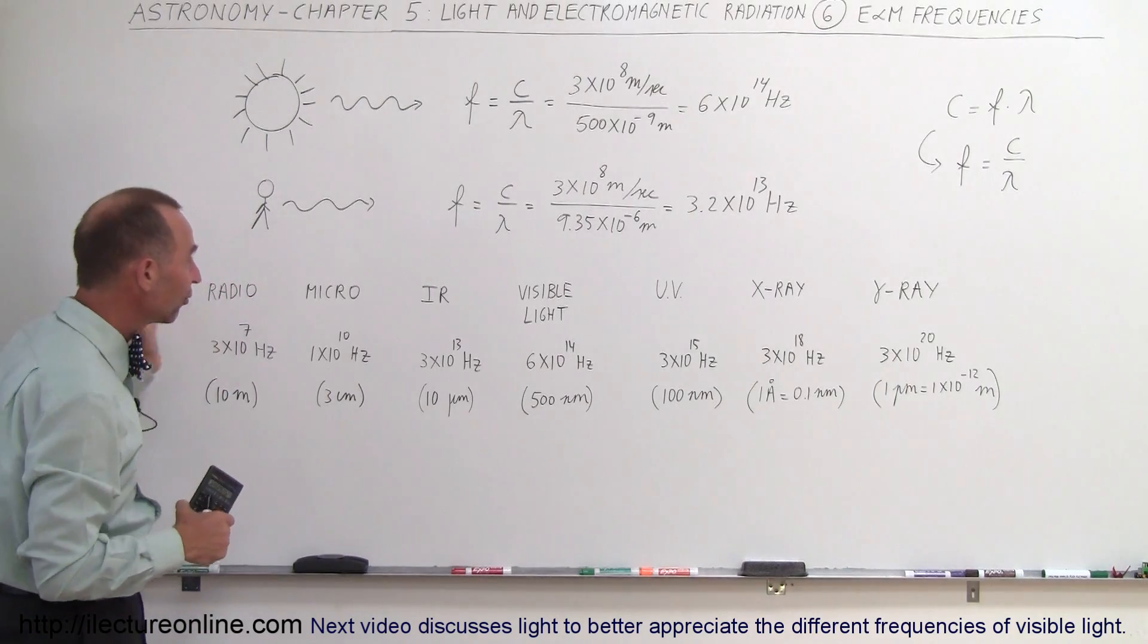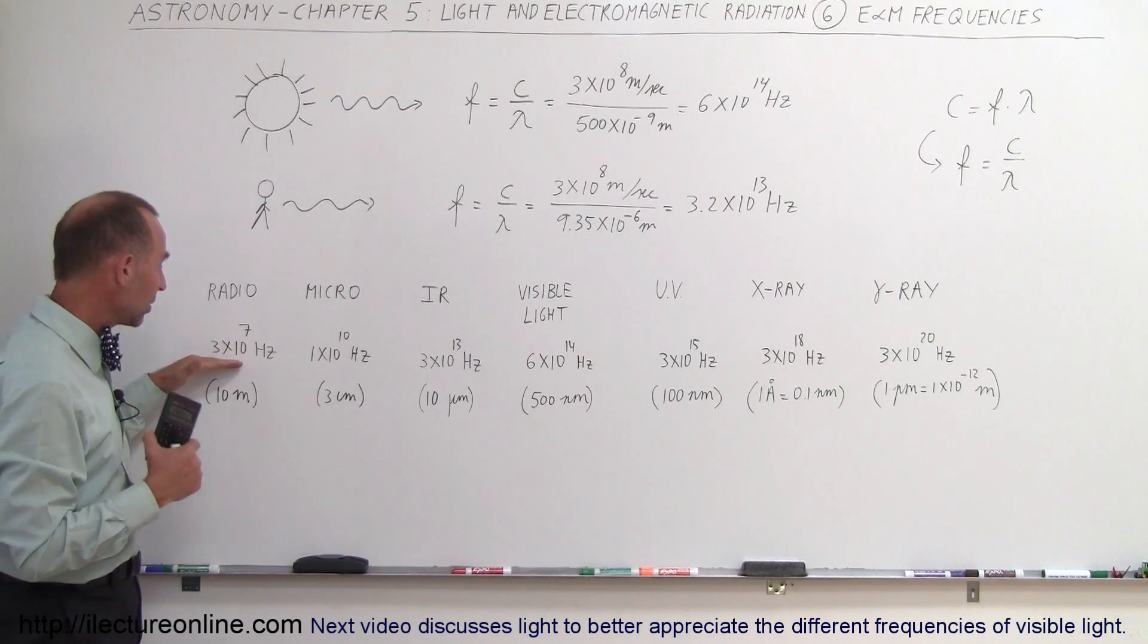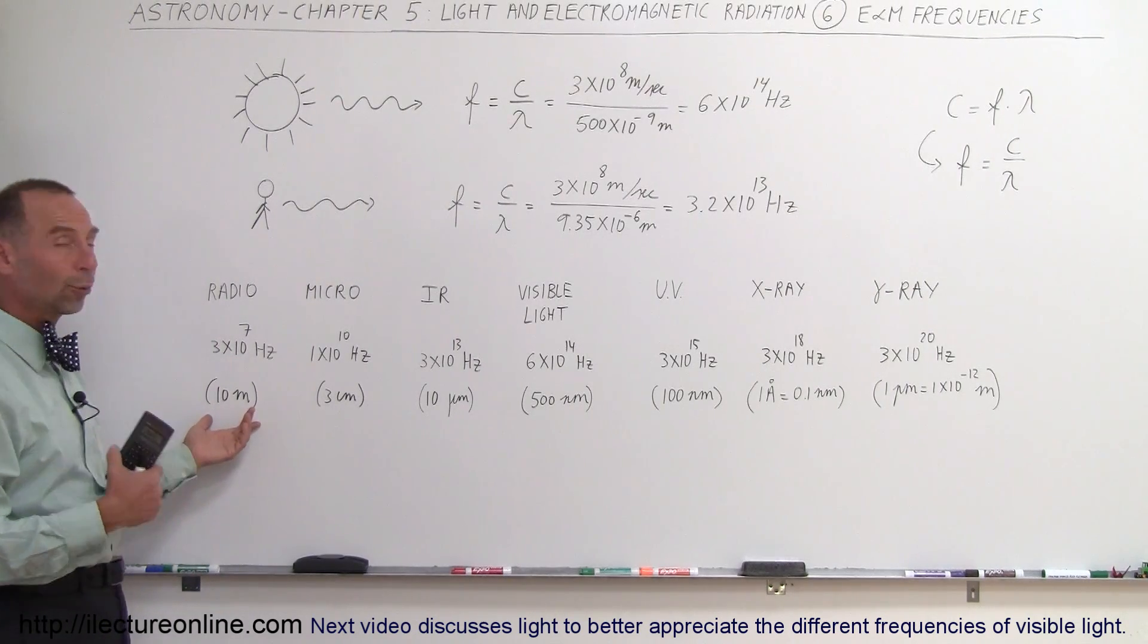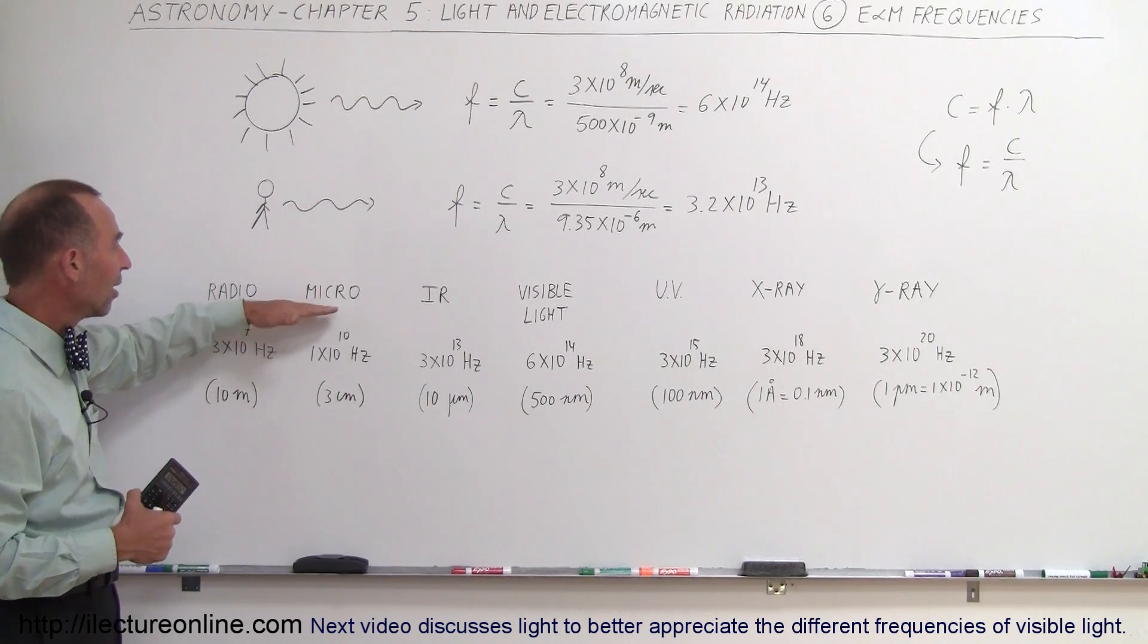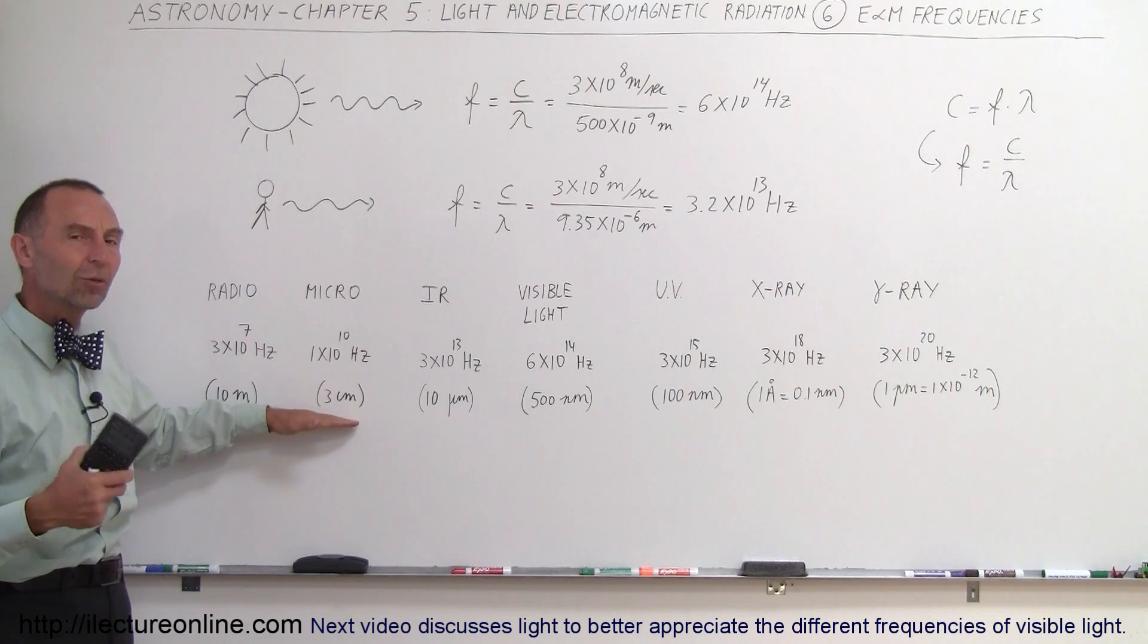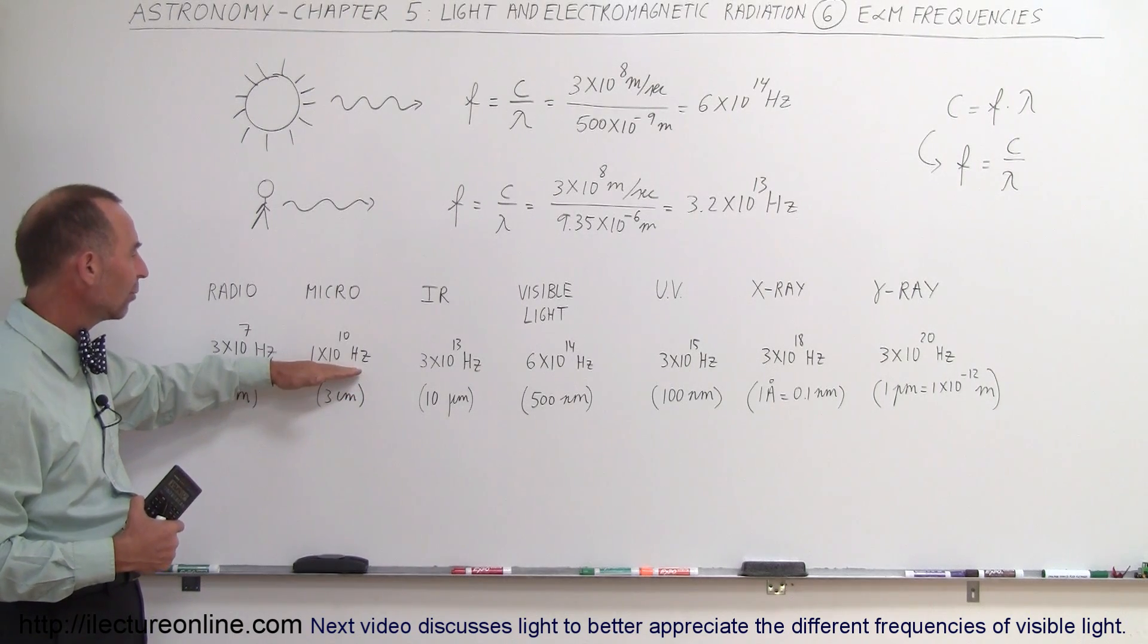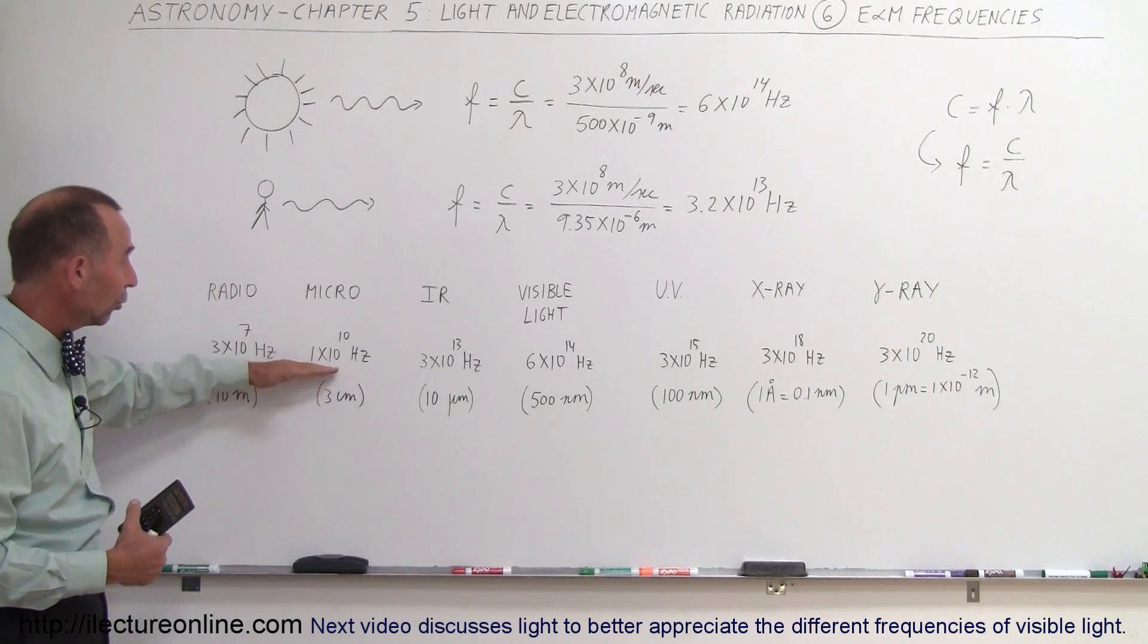So for all the various bands of electromagnetic radiation, the frequency for radio is roughly about 3 times 10 to the 7 hertz, so that would be about 30 million hertz, for wavelengths of 10 meters. That's roughly the average size for radio waves. Microwaves that have wavelengths about in the centimeter range, let's say 3 centimeters, have a frequency about 1 times 10 to the 10 hertz. That is 10 billion hertz.